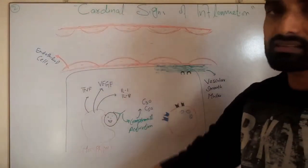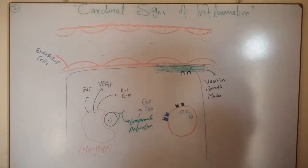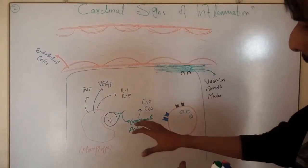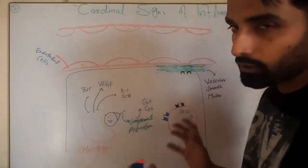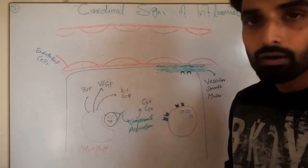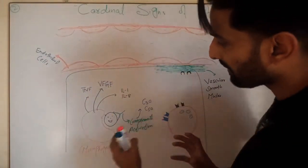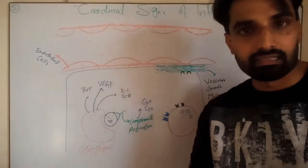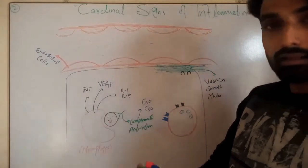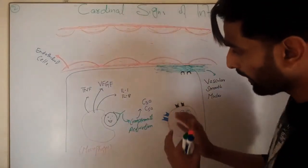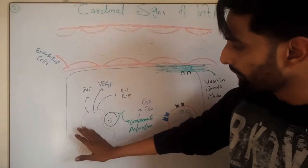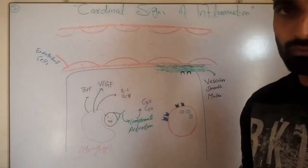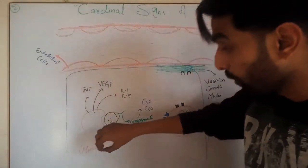These are also called the cardinal signs of inflammation. Let's start from a story. Suppose a pathogen — a bacteria — has invaded inside the tissue. First of all, it will come across the macrophages, because macrophages are local immune cells that are present inside the tissue.